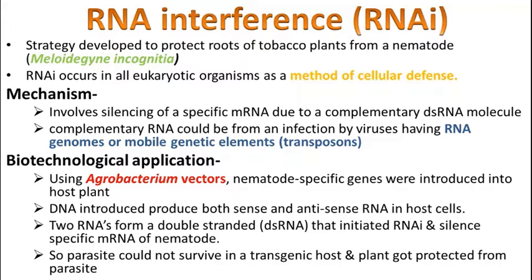A nematode-specific gene — a special type of gene that can destroy the nematode — is introduced into the plant. Using Agrobacterium bacteria, the DNA is introduced into the plant, producing both sense and antisense RNA in the host cells.